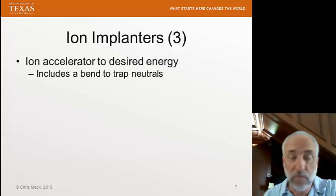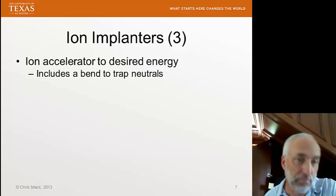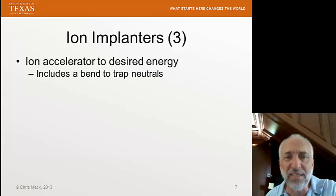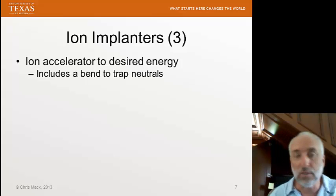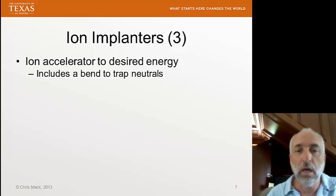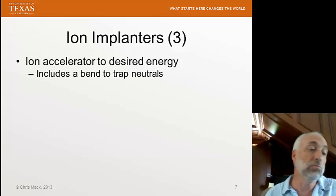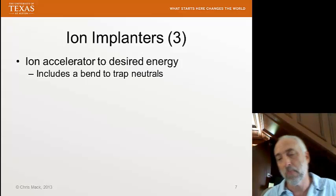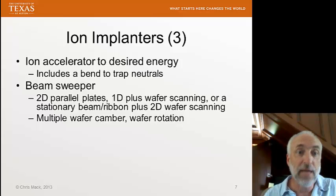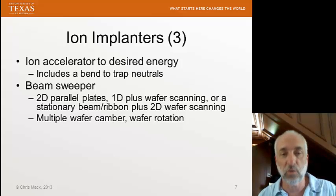Then we put that beam into another ion accelerator to set it to the desired energy. We'll also put a bend in the path to make sure that any neutral particles present will not get bent by the electric field. Sometimes ions, as they're traveling, will bump into each other and neutralize. The bend gets rid of any neutrals before they hit the wafer.